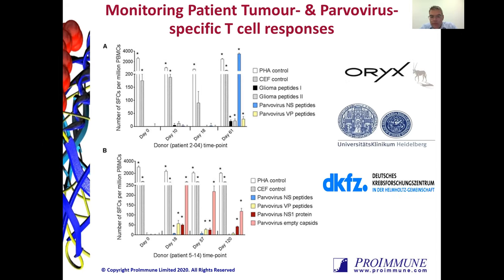In step two, we synthesized the peptides identified by Proprezent along with literature-defined sequences and created four unique peptide pools — two from glioma and two from the virus — then used those four pools to monitor immune responses pre- and post-ParvOryx01 treatment in an ELISpot. Data for two different patients are shown here. In panel A, we see significant responses to PHA control at each time point, with significant responses to all four peptide pools at day 61. In panel B, there were significant responses to PHA and CEF controls at all time points, with significant responses to the peptide pools at day 18 and sustained responses against the virus at day 57 and all the way out to day 120. This is a great example of how effective ELISpot technology can be at measuring patient responses.